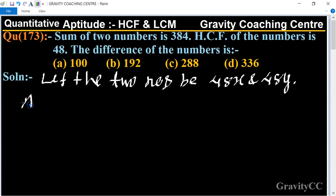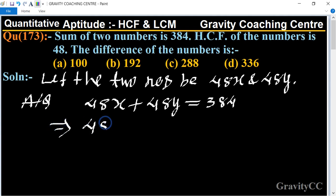According to the question, their sum is 48x plus 48y equal to 384. Now we take 48 as common, so 48 times (x plus y) equal to 384.